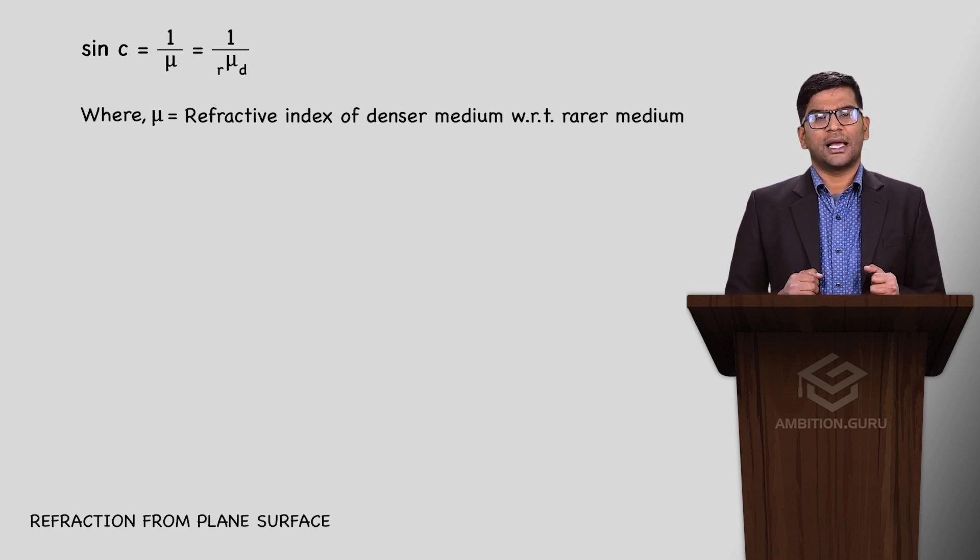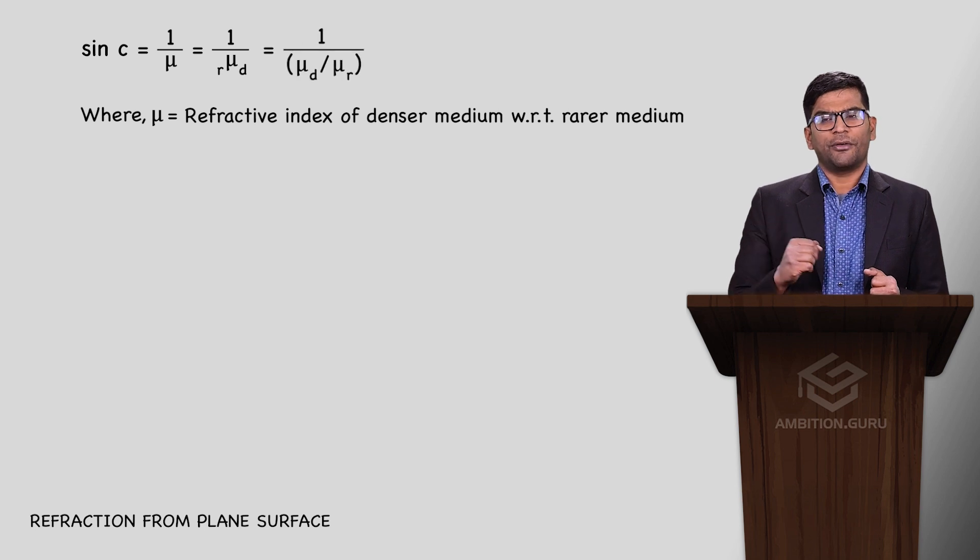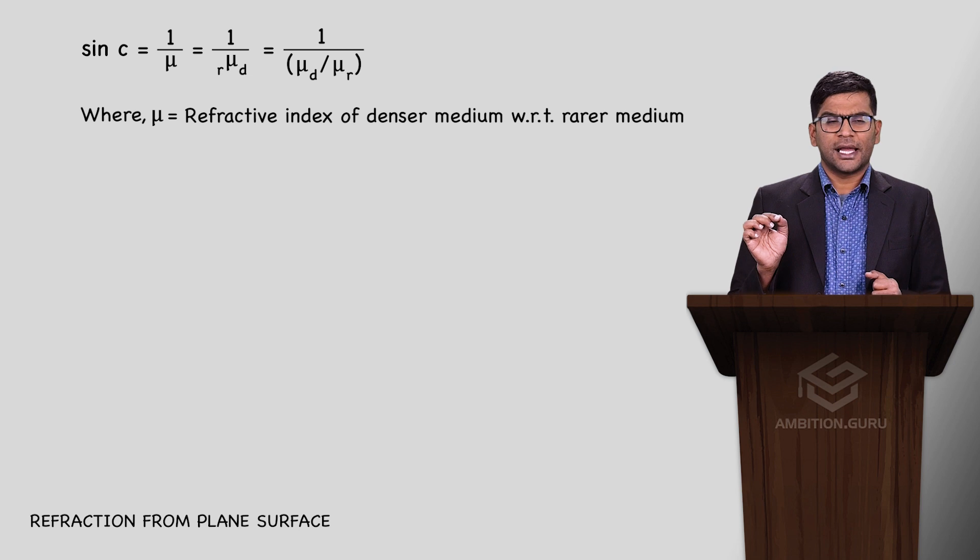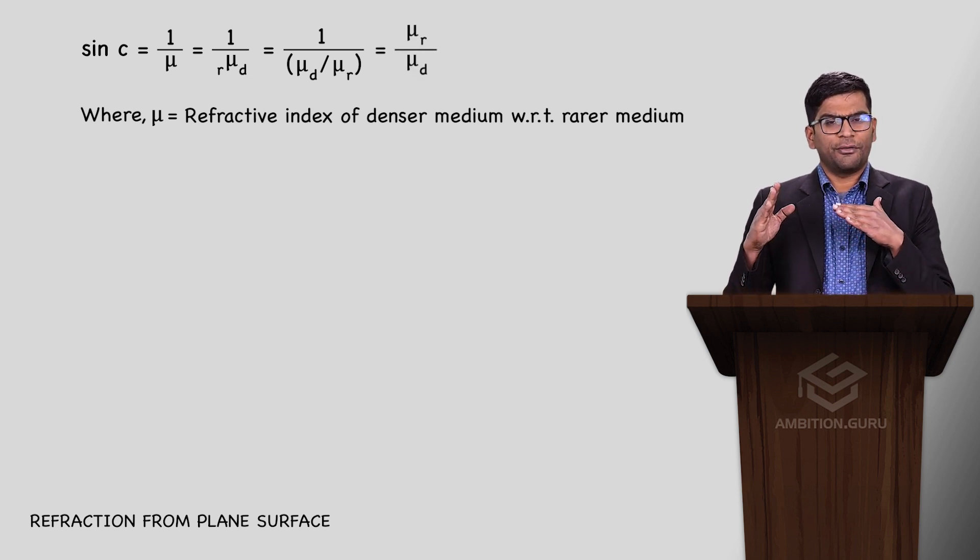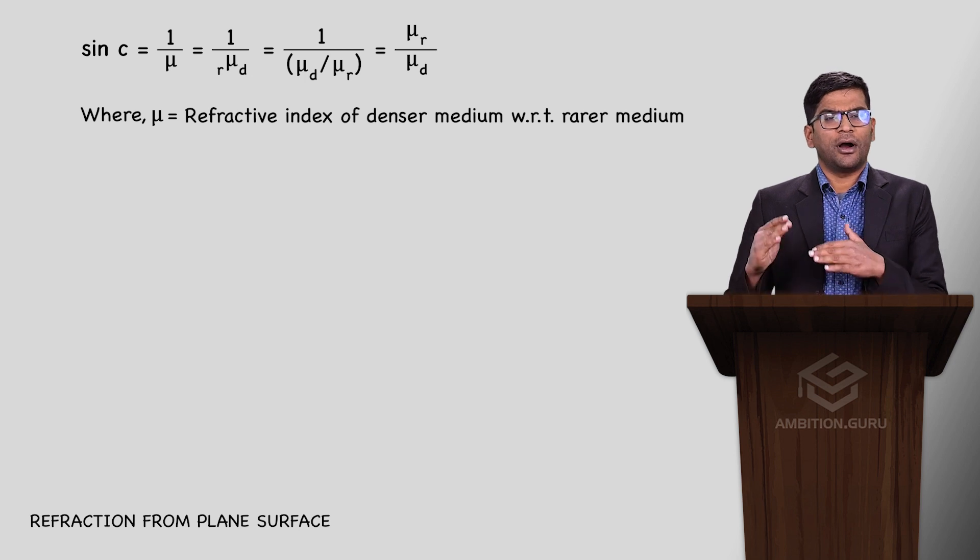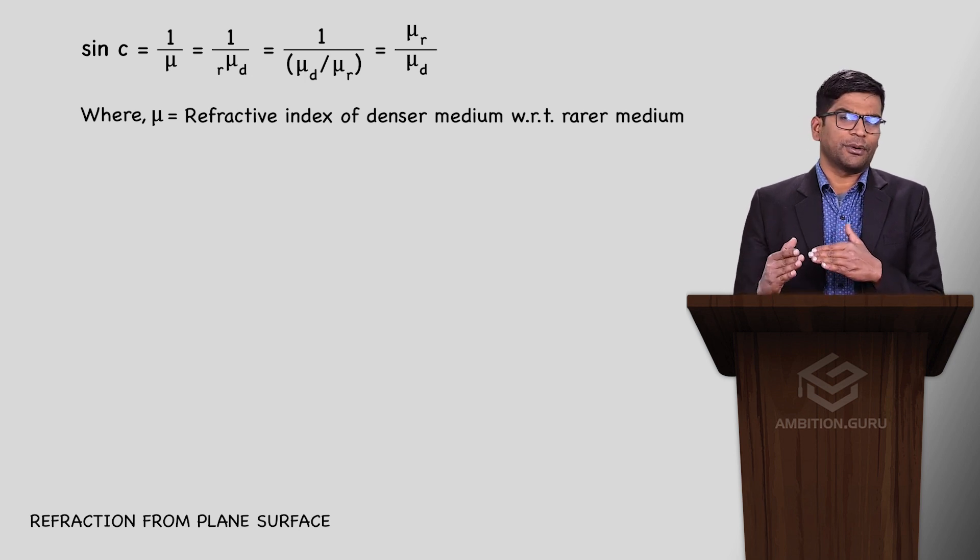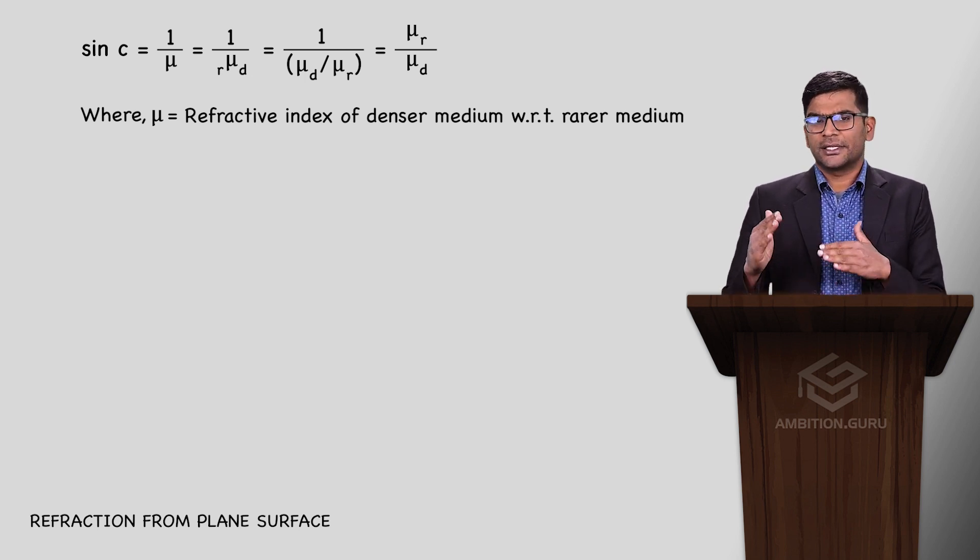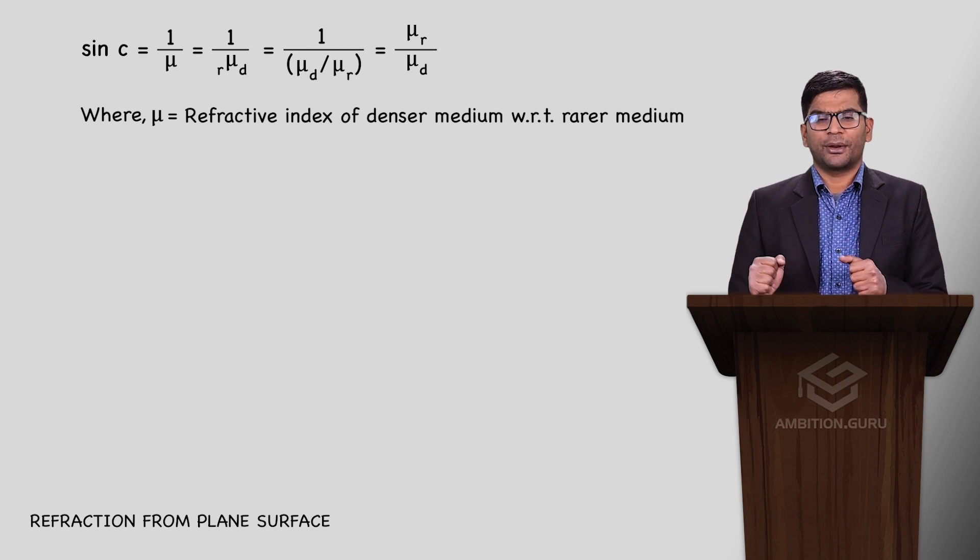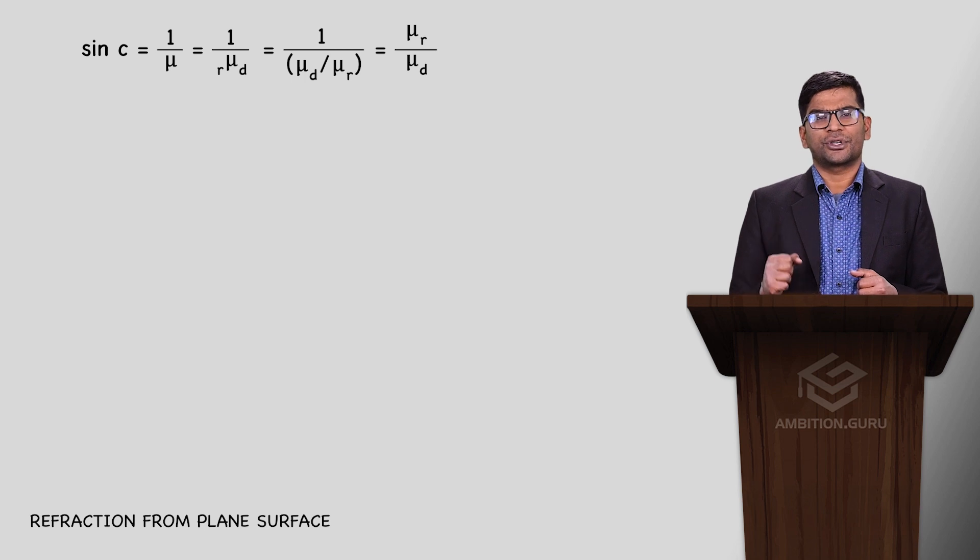We already know this formula. μ of denser upon μ of rarer. Doing this, what does sin c equal? Sin c equals μ of rarer upon μ of denser. This is the formula that we can relate.